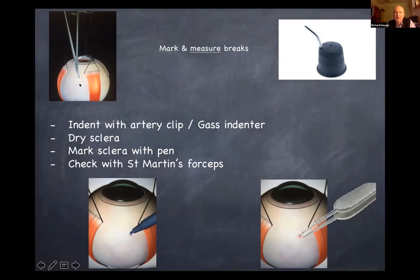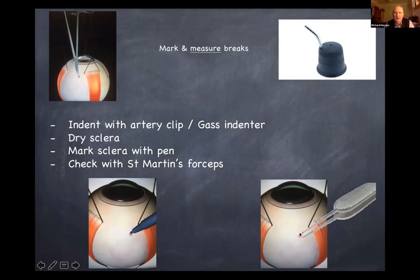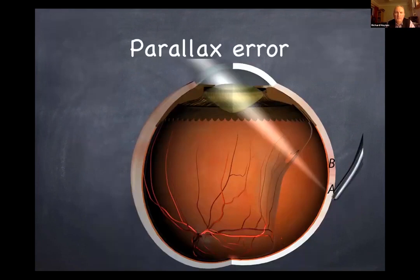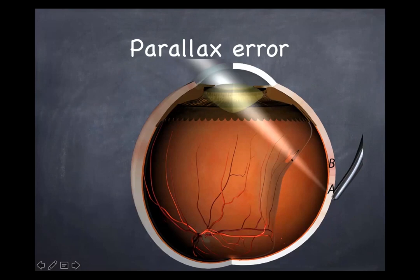Be very careful if you've got thin sclera. You can also use a gas indenter, which has a little ring on the end leaving a nice ring-shaped mark, though it doesn't slide around as easily as the curved artery clip. Once you've made your mark, dry it with a cotton tip, mark it with a pen, dry it again, then grasp that mark with St. Martin's forceps and look again with the indirect, indenting with those forceps to ensure you've got exactly the correct position of the break. Be aware of parallax error — the apparent position of the indentation may not align with the true position of the break.